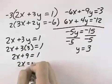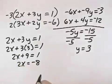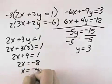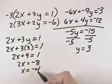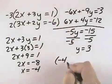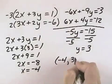Subtracting 9, I get 2x equals negative 8, and dividing by 2, negative 8 divided by 2 is negative 4. So my solution is x equals negative 4, y equals 3, and that can also be expressed as the ordered pair negative 4, 3.